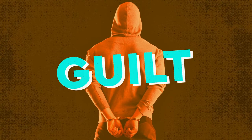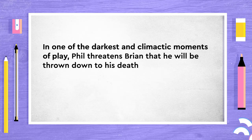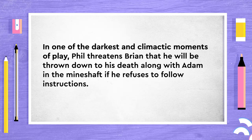Danny, a minor gang member, is increasingly concerned about getting references for dental college. Kathy is elated that she's going to be on the telly and excited by the idea she might become famous. Brian enters a state of near mental breakdown, constantly crying because of the stress being put on him. He does not want to go to the police to identify the innocent man as the supposed kidnapper. In one of the darkest and climactic moments of the play, Phil threatens Brian that he will be thrown down the mineshaft along with Adam if he refuses to follow instructions.